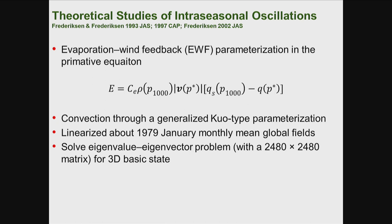They linearize with respect to the January 1979 global three-dimensional wind field. This produces a linear equation, and they solve an eigenvalue-eigenvector problem with a 2480 by 2480 matrix for the three-dimensional basic state. They then find a set of unstable modes from this system.